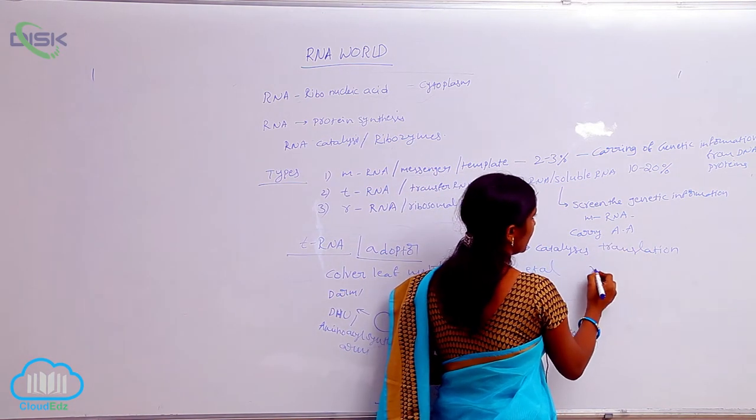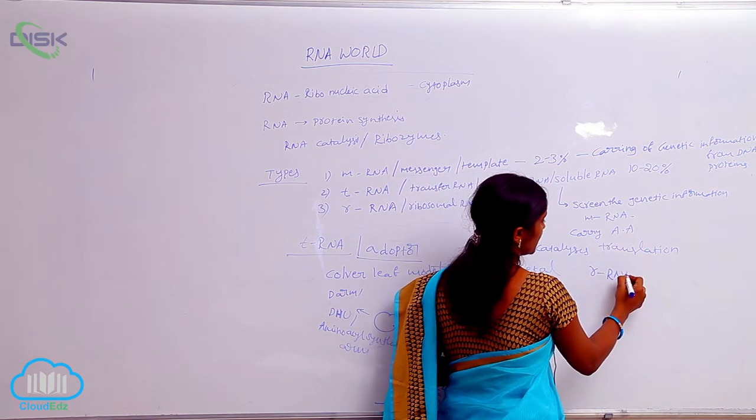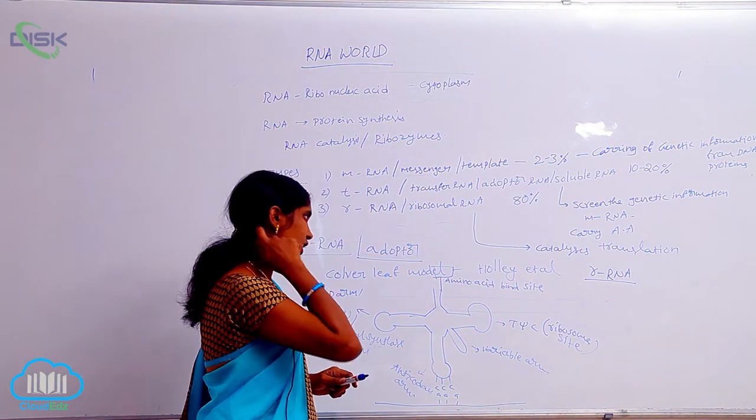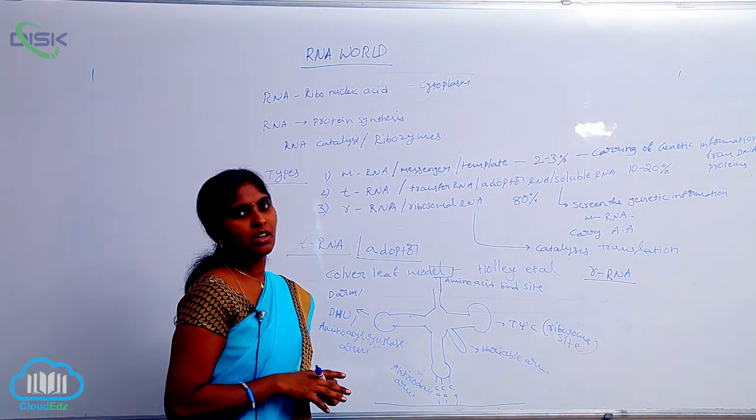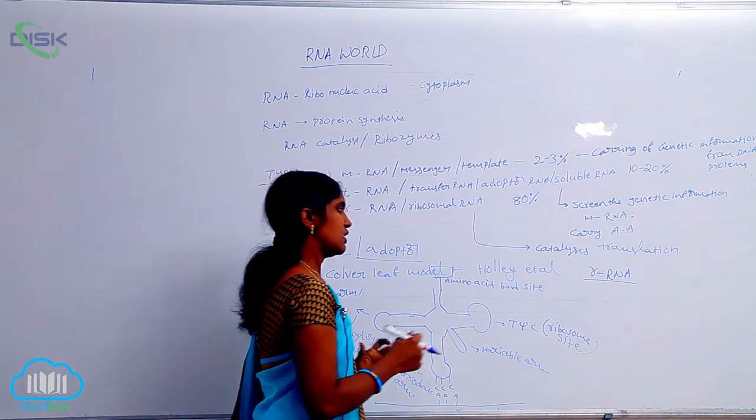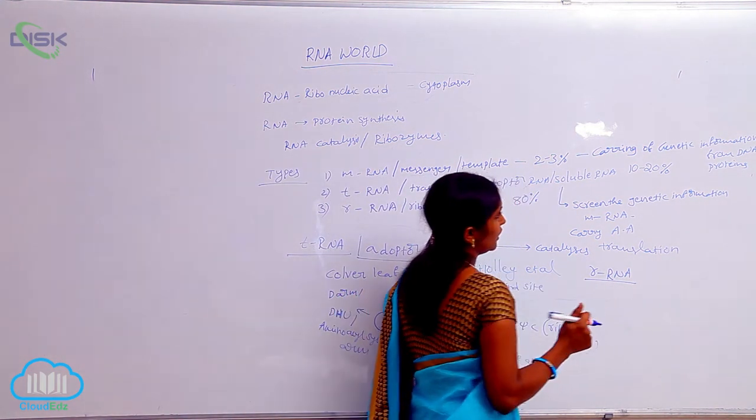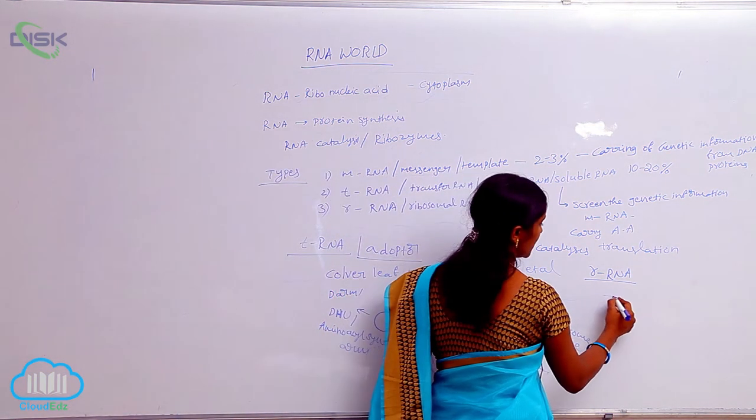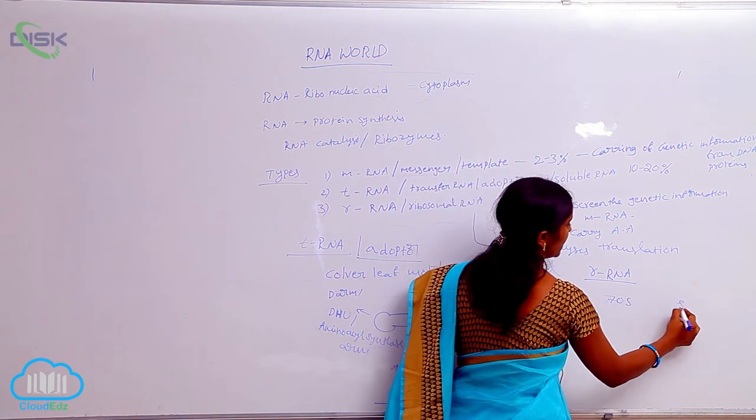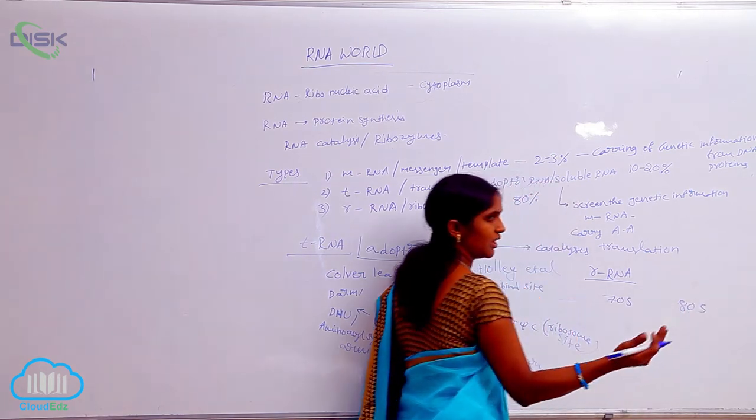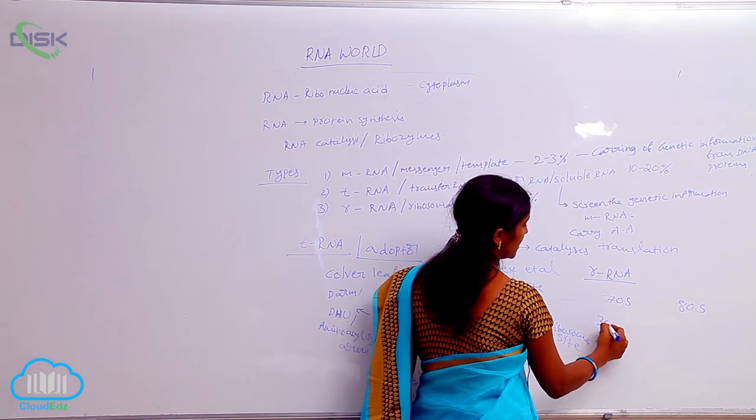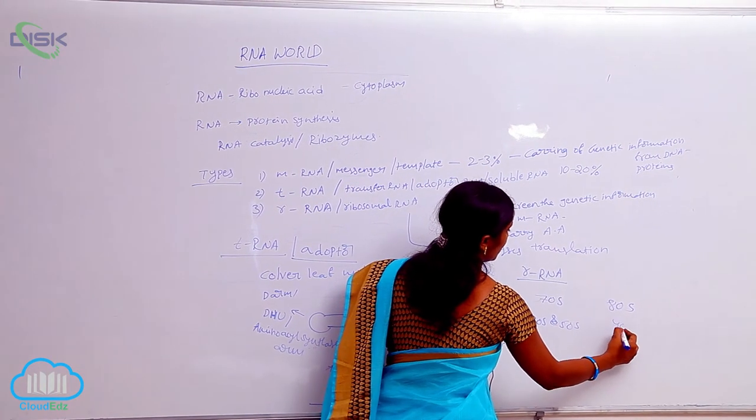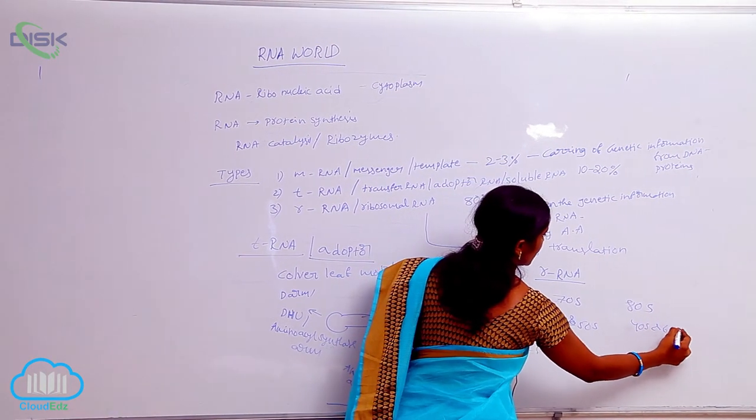The rRNA can occupy 80% of the total RNA. It is in linear form. In most organisms it is stable. And also here two types. It is involved in ribosomes. The ribosomes are two types: 70S ribosomes and 80S ribosomes. They have the subunits of 30S and 50S subunits, whereas here 40S and 60S subunits.